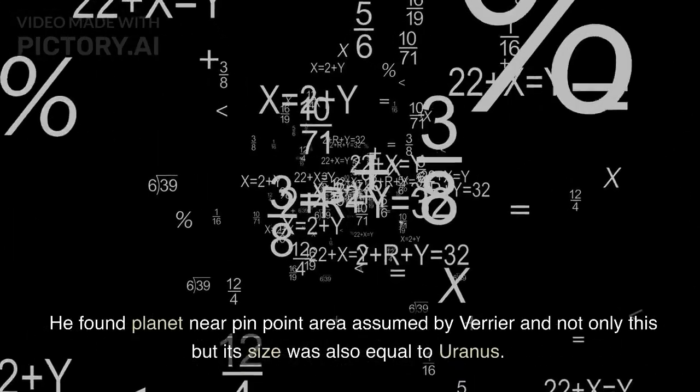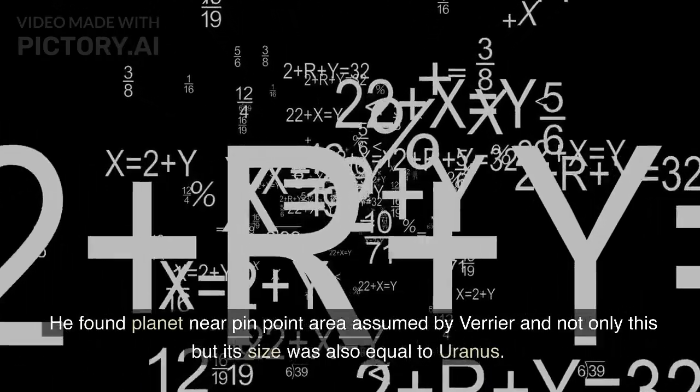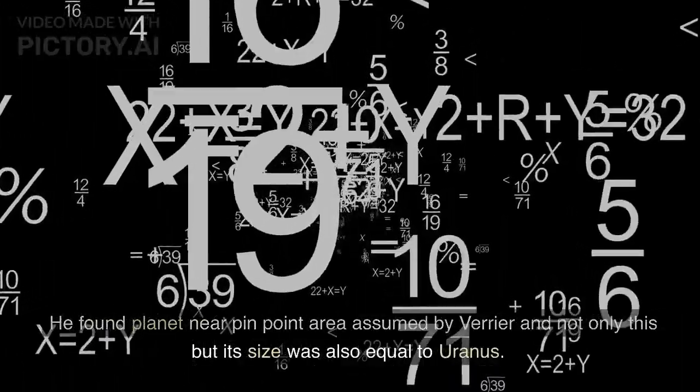He found a planet near the pinpoint area predicted by Leveria, and not only that, but its size was also equal to Uranus.